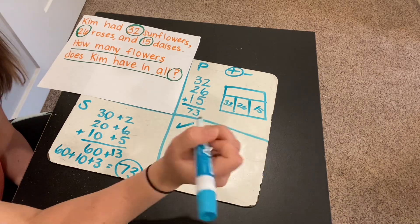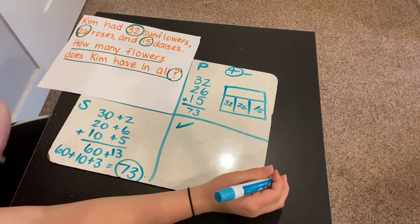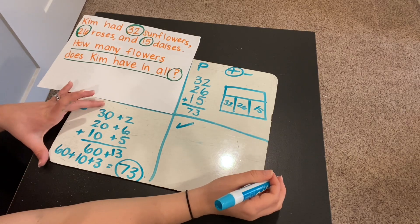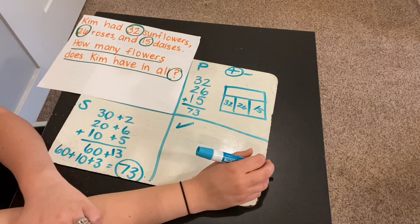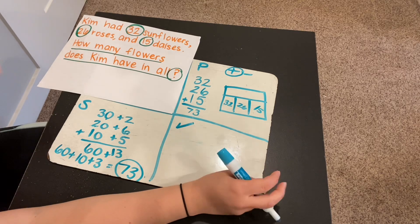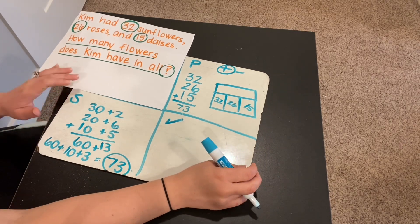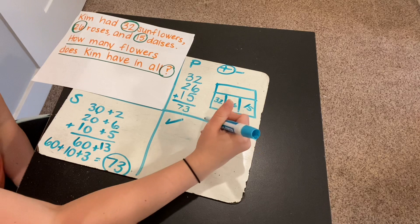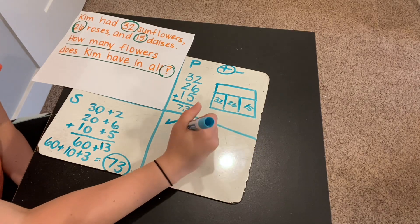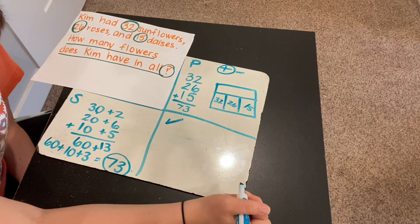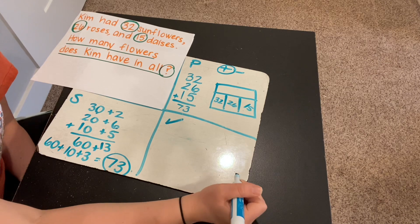But we're not done yet because we're going to check it. If this way of solving the problem is confusing for you, that's okay because you have lots of other strategies that you can use to solve problems. So if one doesn't work for you, you can try another one. So my next way that I'm going to check this problem, I think I'm going to draw base 10 blocks to help me.